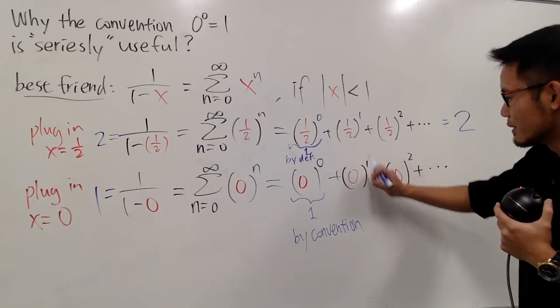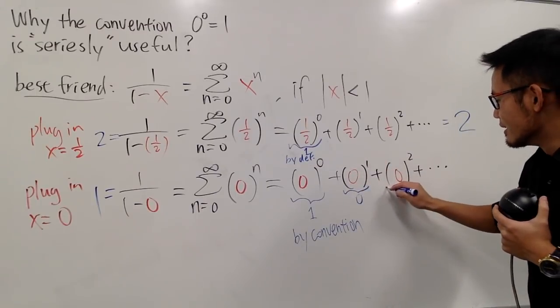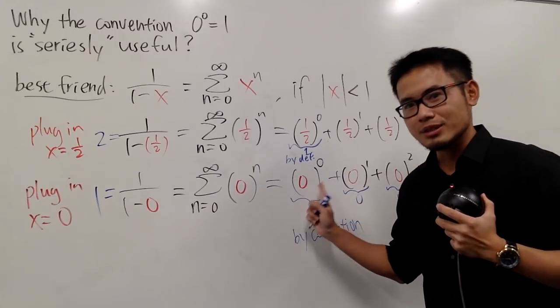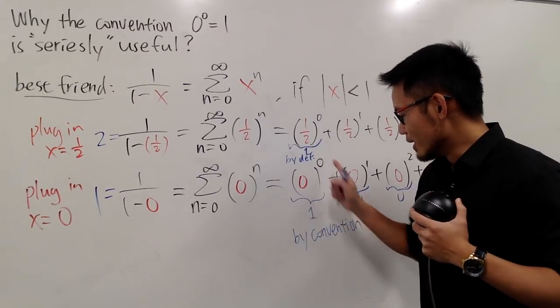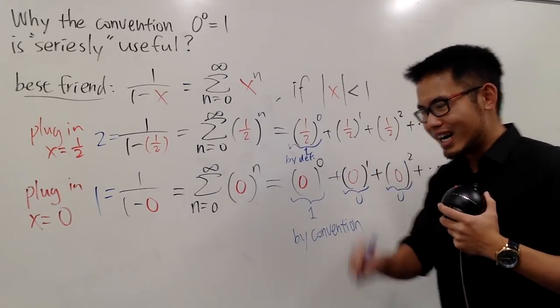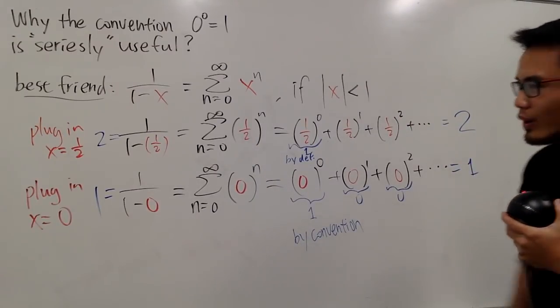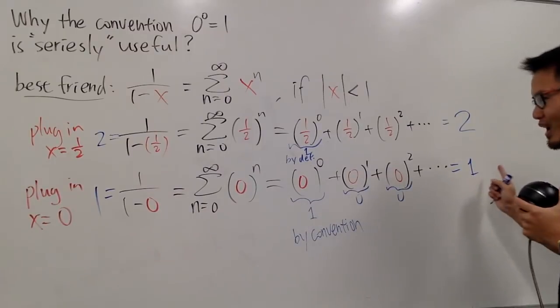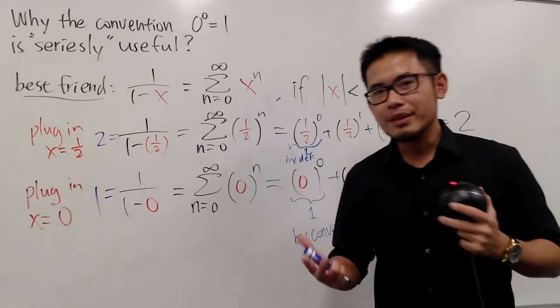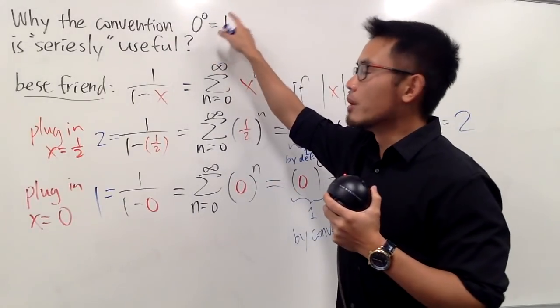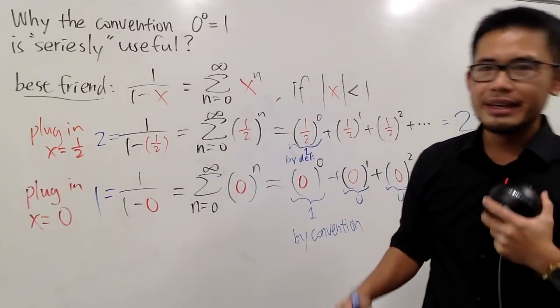Well, all these are 0, because 0 to the first power is definitely 0. 0 to the second power is definitely 0, and so on. But, we do have this guy to save this. 0 to a 0 is legitimately equal to 1 by convention now. Aha! So, we can say 1 is equal to 1. So, this is an example why we take the convention that 0 to a 0 is equal to 1 in power series.